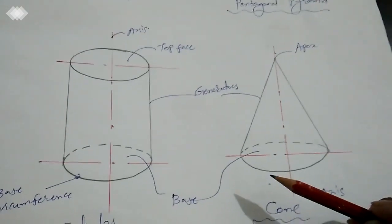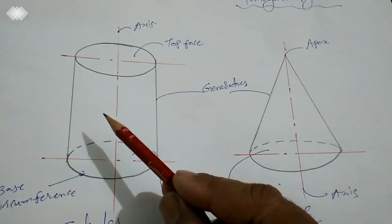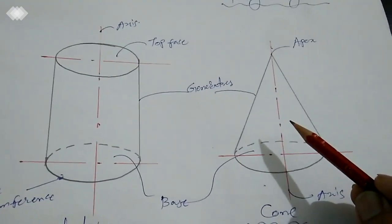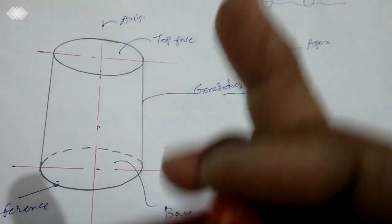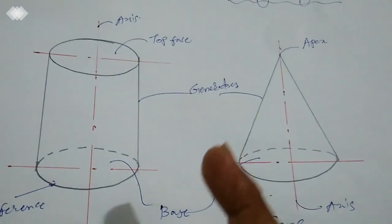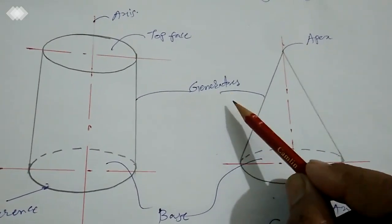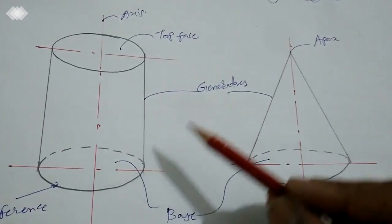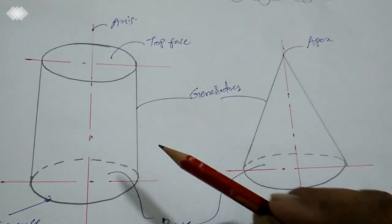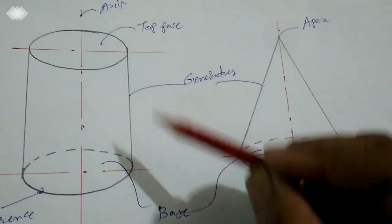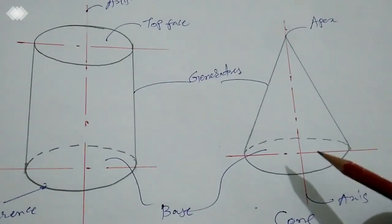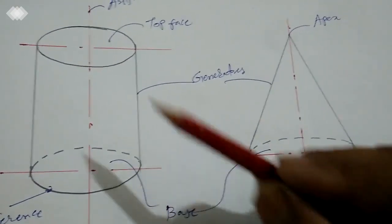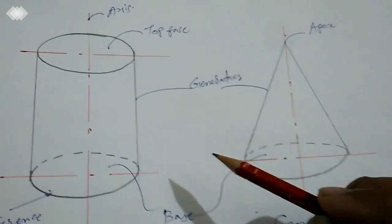In case of a cylinder, the nomenclature is simpler because it carries a circular curved lateral surface. In the case of a cone, the lateral surface is conical in nature. The extreme vertical lines on the left and right are not called edges — they are called generators. We artificially generate lines on the lateral surface for construction purposes. If we divide the base circle or top face into 8 or 12 parts, we generate 8 or 12 generators on that surface in order to project it.